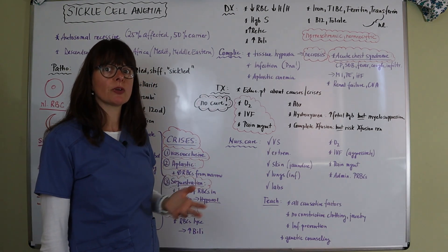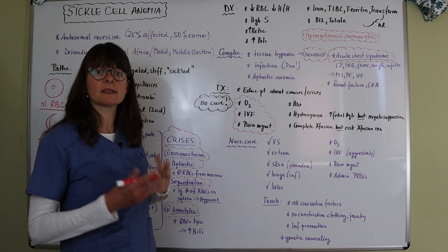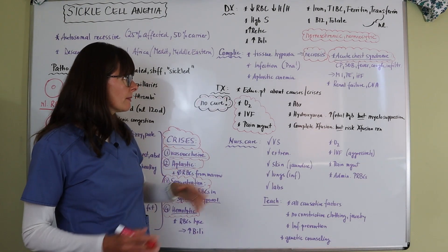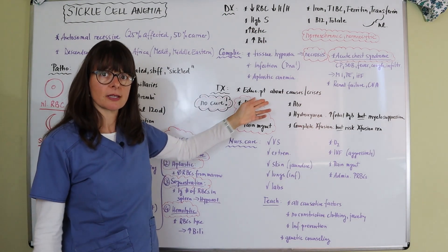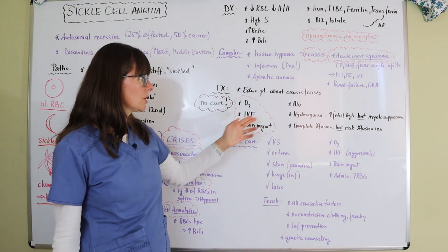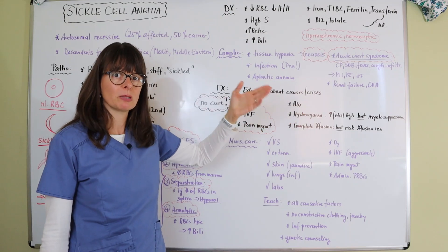So how do we treat patients with sickle cell anemia? There is no cure because it is a genetic autosomal recessive disorder. So it's very important to identify patients and educate them about the causes that can put them into these crises, and then also teach them about the crisis and what to do, which is pretty much get medical attention.